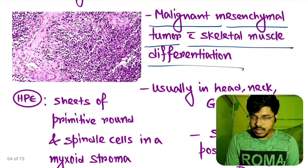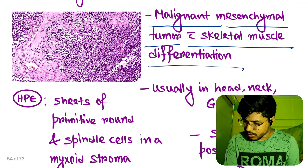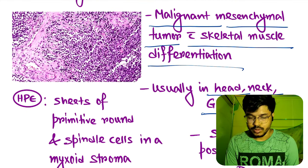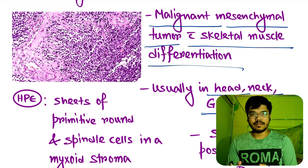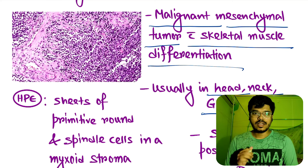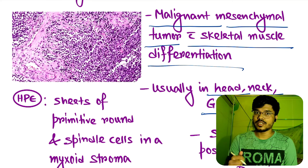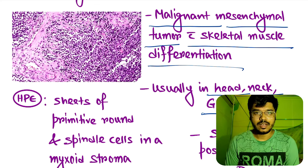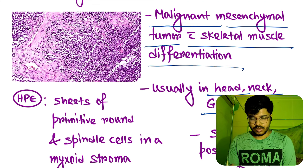The usual location is head, neck, and genitourinary tract. There may also be cardiac rhabdomyosarcoma — cardiac rhabdomyosarcoma is associated with tuberous sclerosis. This is an important question.